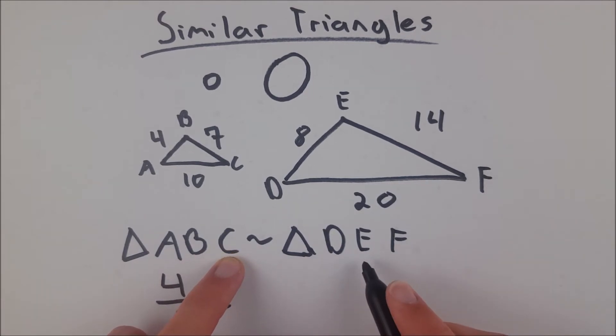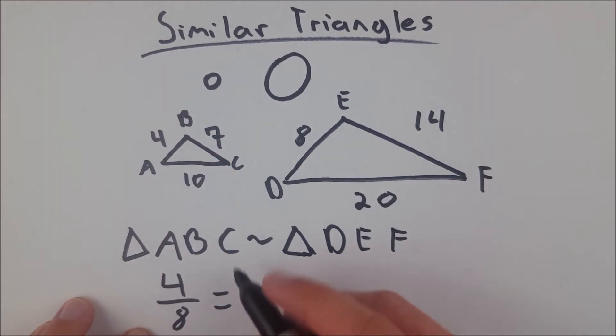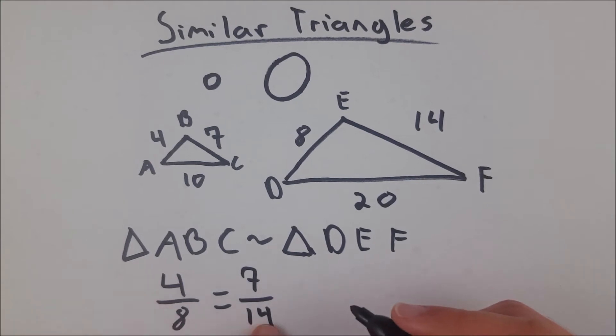Let's look at another pair of corresponding sides. Side BC corresponds to side EF. There's BC, there's EF. So, that is 7 over 14. Both of these are equal to one half, so we're good so far.